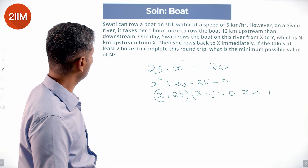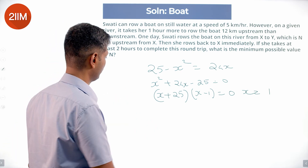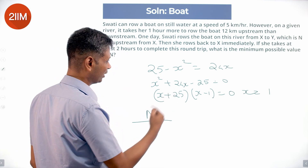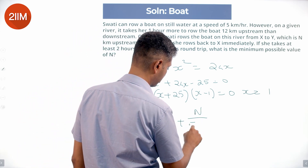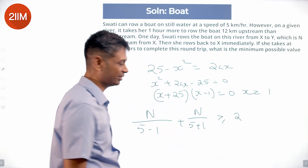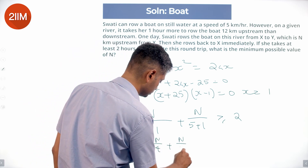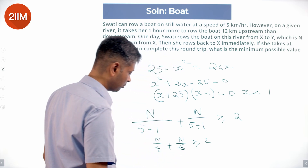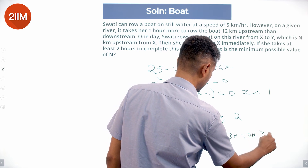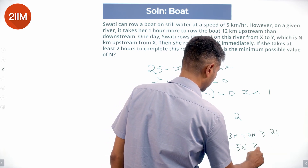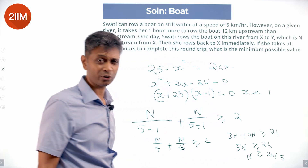Now, she goes up and down N kilometers and takes at least 2 hours. With river speed X equal to 1 and her still water speed of 5: N divided by (5 minus 1) plus N divided by (5 plus 1) is greater than or equal to 2. So N divided by 4 plus N divided by 6 is greater than or equal to 2. Multiplying by 12: 3N plus 2N is greater than or equal to 24. So 5N is greater than or equal to 24, giving N greater than or equal to 4.8.